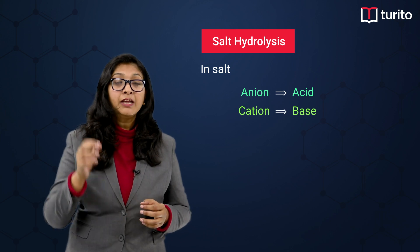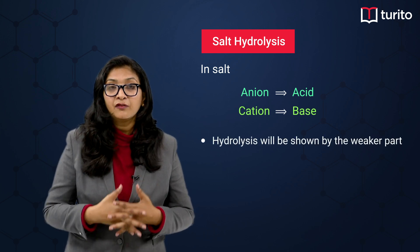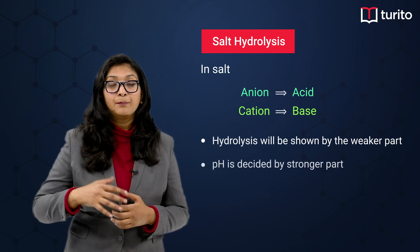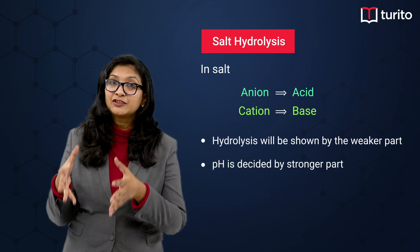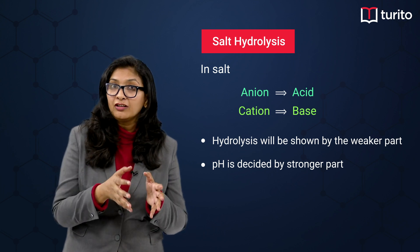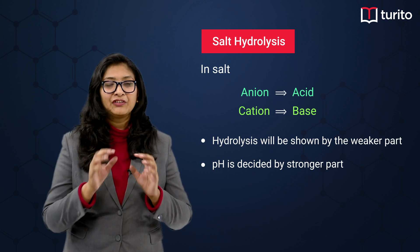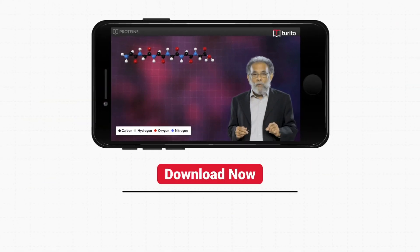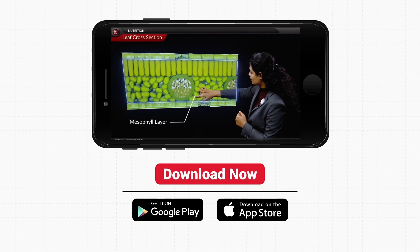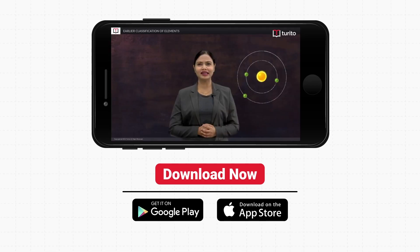To remember all this: in a salt, the anion comes from the acid and the cation comes from the base. In salt hydrolysis, only the weaker part will be hydrolyzed, and the pH will always be decided by the stronger part. These are the important points for salt hydrolysis to make your concept stronger.